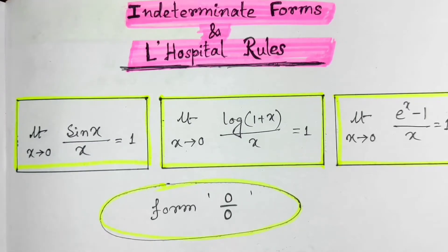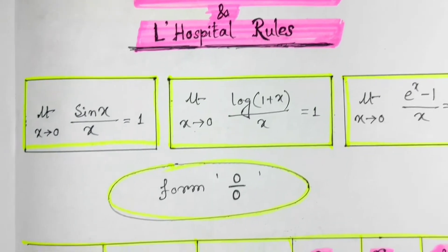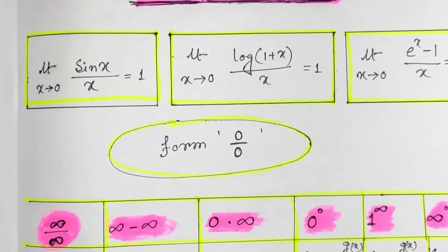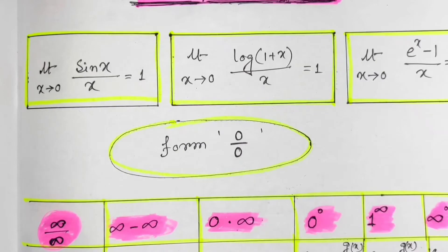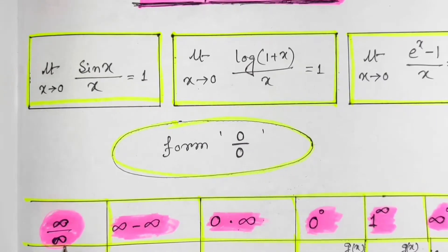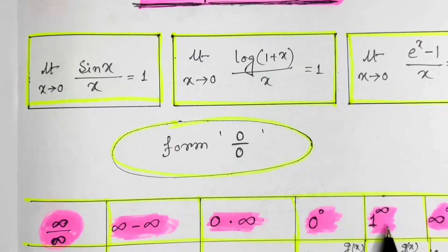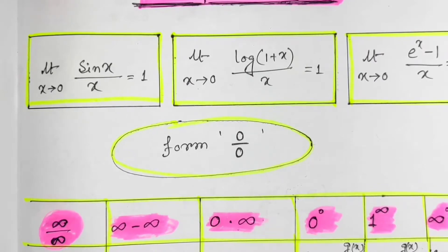Not only 0 by 0 is an indeterminate form — there are many more. For example, if we find a limiting function where the denominator and numerator are both infinity, that's infinity by infinity. Otherwise it could be infinity minus infinity, or 0 into infinity, or 0 to the power 0, or 1 to the power infinity, or infinity to the power 0. All of these are indeterminate forms.